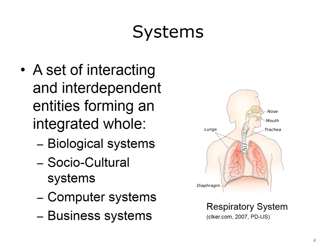A sociocultural system is a system within society and culture. Society is an association of people with the same interests, whereas culture is the knowledge and values shared by that society. Computer systems combine the computer, software, and peripheral devices necessary to make the computer function. Business systems provide goods and services, consisting of people and/or machinery, processes, and procedures. An accounting system is an example of a business system.